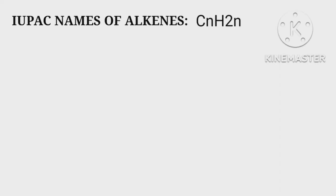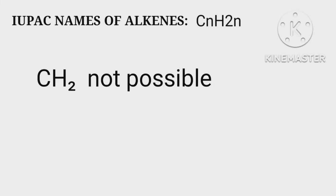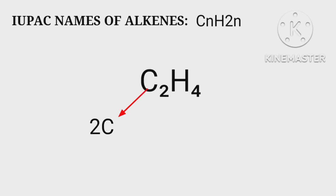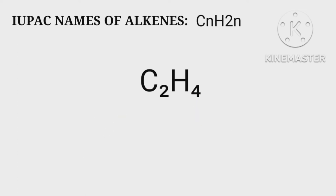In alkenes, instead of '-ane' we add '-ene' to the root name. CH2 is not possible because the valency is not satisfied. C2H4 means the prefix 'eth'; H4 means two times the number of carbon atoms, which equals four. Hence it belongs to the alkene group.